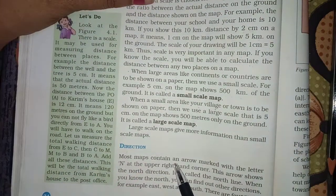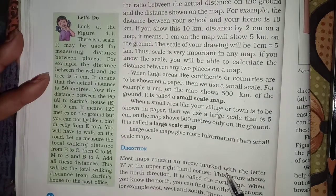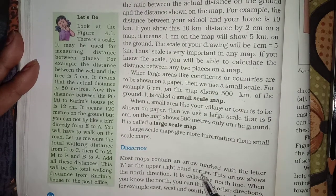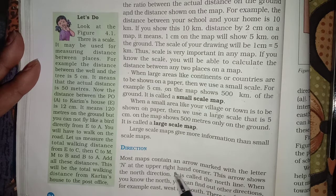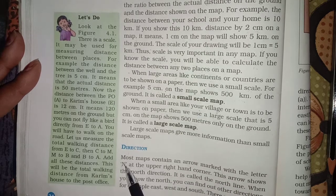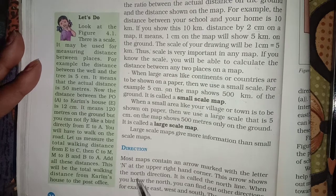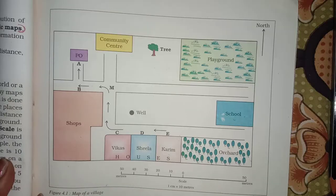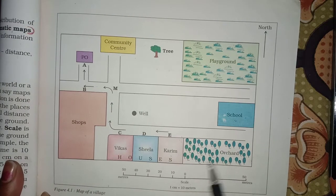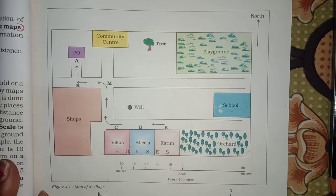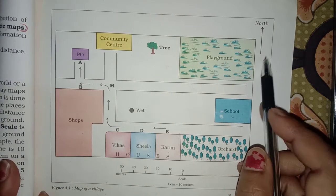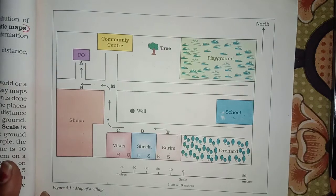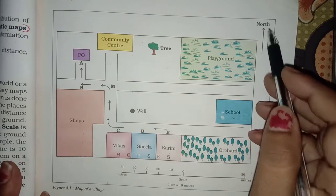Most maps contain an arrow marked with the letter N at the upper right hand corner. This arrow shows the north direction. As the map of village is built, the upper right corner is built in the north direction. This is the north direction.